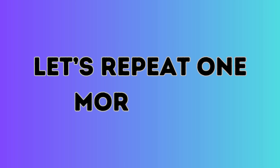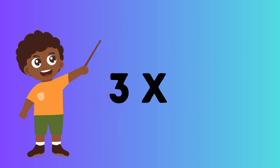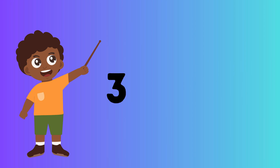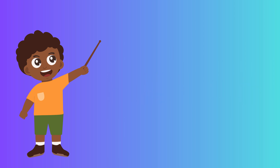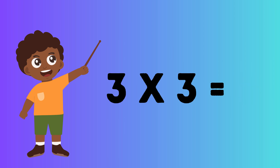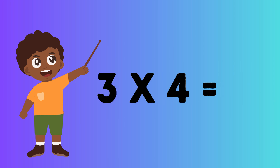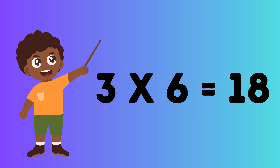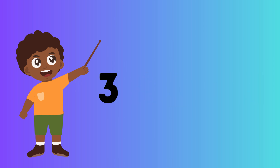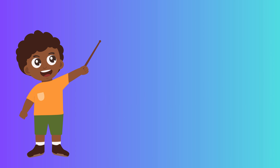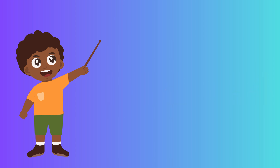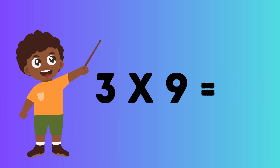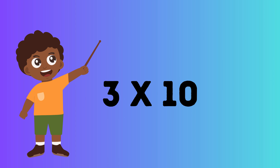Let's repeat one more time. 3 1's are 3. 3 2's are 6. 3 3's are 9. 3 4's are 12. 3 5's are 15. 3 6's are 18. 3 7's are 21. 3 8's are 24. 3 9's are 27. 3 10's are 30.